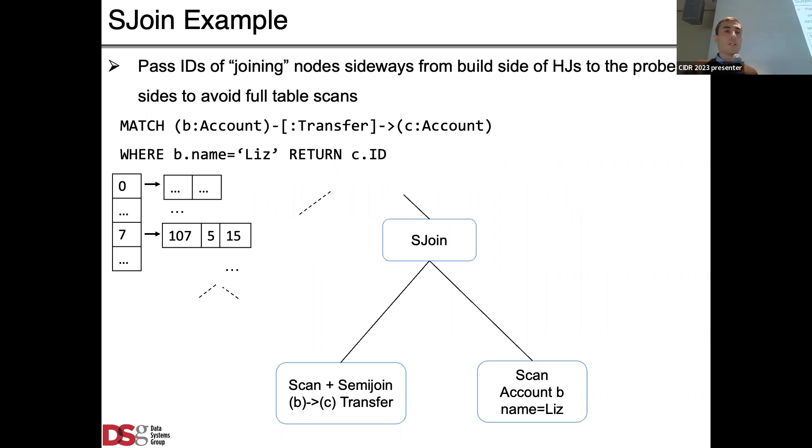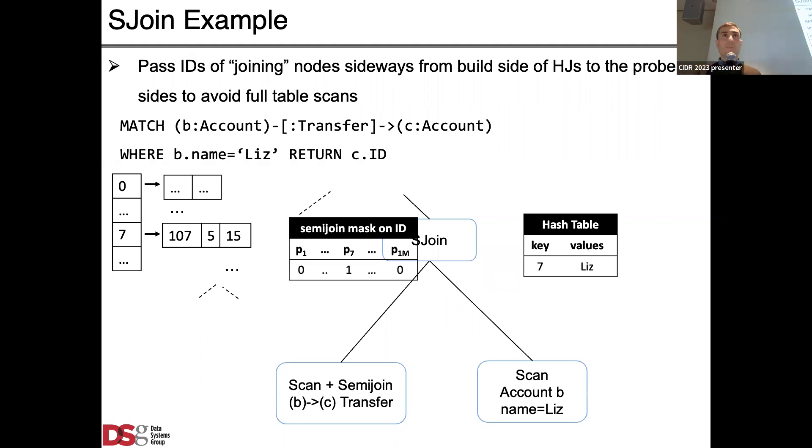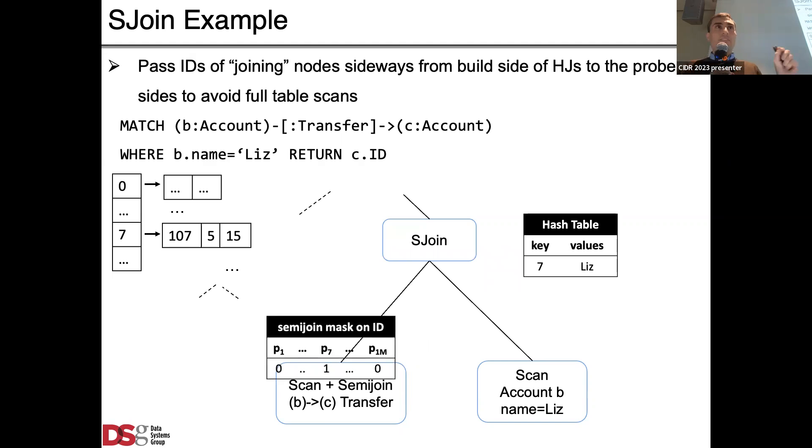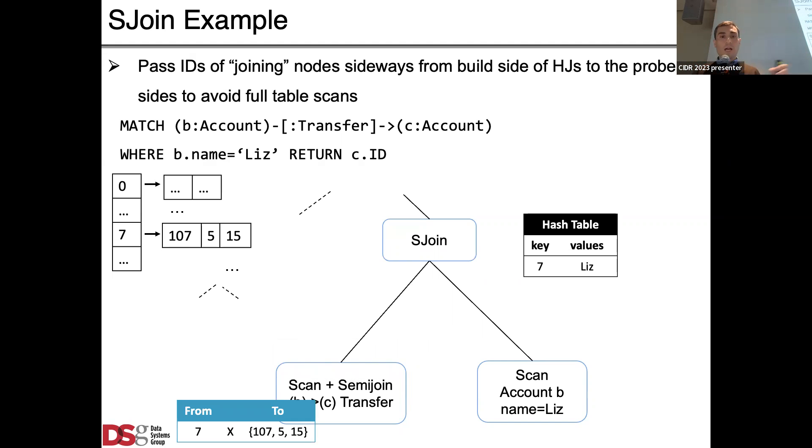Let me start with S-join which is the simpler modified hash join algorithm which passes essentially a semi-join filter sideways from the build side to the probe side. Let me demonstrate this on a simpler query. This is a one-hop query, a simplified version of the previous query, where we're only looking at the IDs of Liz's outgoing neighbors. The way it would process this with an S-join operator is I'll assume that the right side, the scan of account b, is the build side. We scan and find this account, suppose there's only one and that's seven with ID seven and name Liz. In the hash table, at this point we know exactly what are the records or the edges, the transfer edges, that need to be scanned from the left side, which will pass as a semi-join filter to the left.